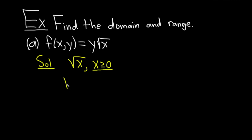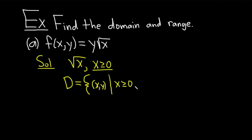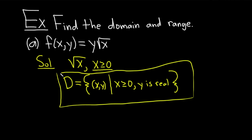I'm going to use the letter d for domain. The domain is a set of ordered pairs because the ordered pairs here are inputs. It's really important to put the bracket notation like this: the set of all ordered pairs x comma y such that x has to be greater than or equal to 0. You could say something about y, but it's not really necessary — most books don't. I'll put a comma and say y is real, meaning it's a real number and it could be any number. This would be the answer for the domain.